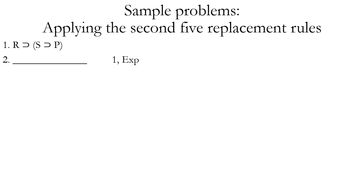Another practice problem: we have a conditional whose consequent is another conditional. So if we use exportation on line one, what do we get? The second antecedent, S, joins the first antecedent, R, in a conjunction that together forms the antecedent of this conditional.